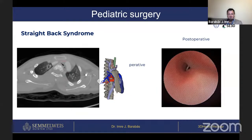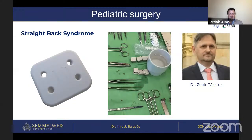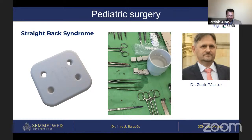Here we can see the preoperative bronchoscopy and the 3D model of the patient showing the very narrow trachea. We printed out a medical device — an elevation piece placed between the costae — that, when inserted, elevates the sternum and decreases the pressure on the trachea, resulting in a larger bronchial lumen.